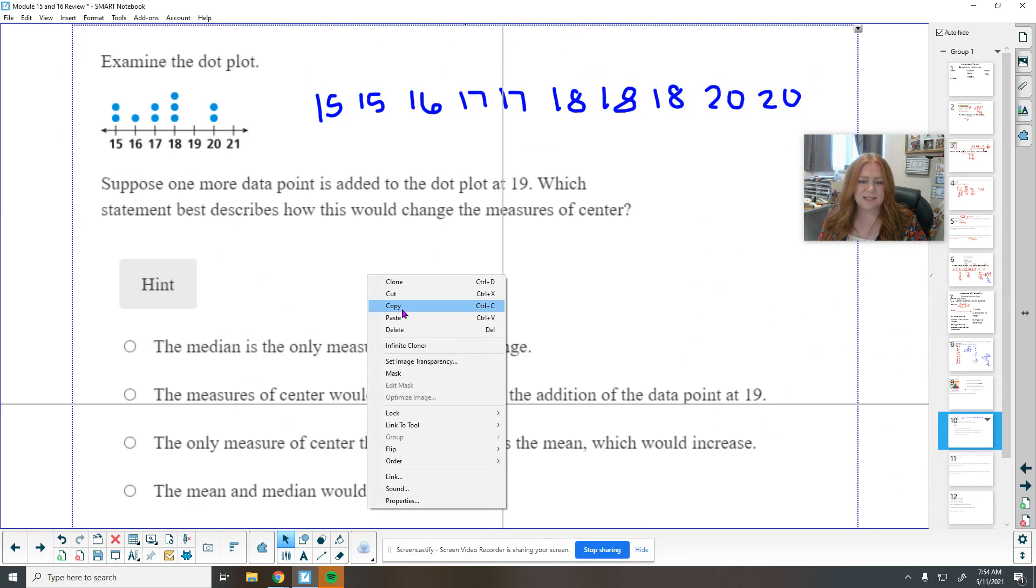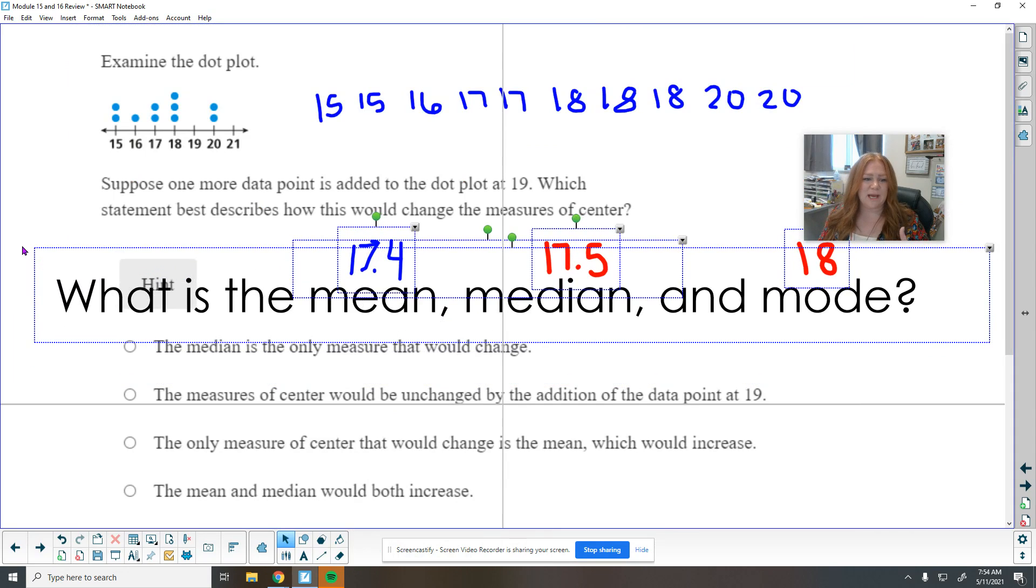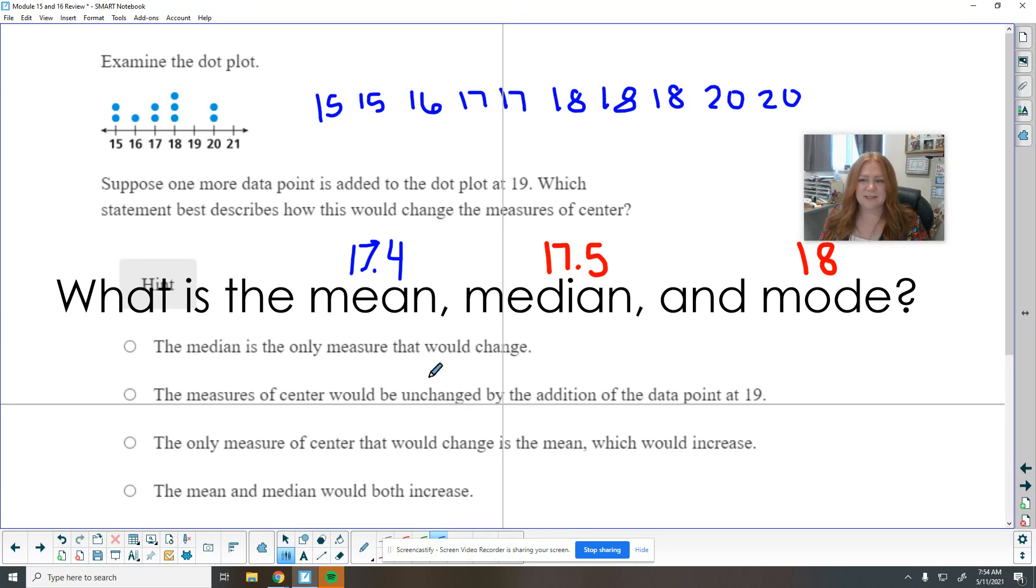So we already did this. So we don't need to do it again. So we know this is what it was to start. Now we're adding in another number 19 right here. So we need to see how are the measures of center going to change. So did the mode change? No, the most occurring number is still 18. So that stayed the same.